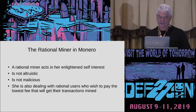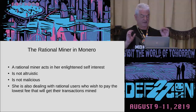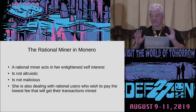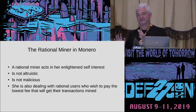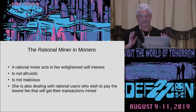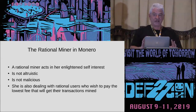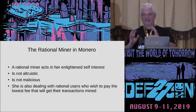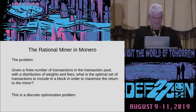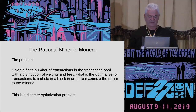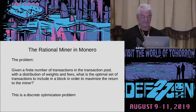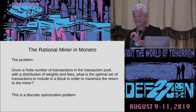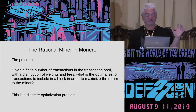Now taking a close look at the rational miner. The rational miner is neither altruistic nor malicious and acts in her enlightened self-interest. She's also dealing with rational users who wish to pay the lowest fee to get their transactions mined. This is the basic dynamic of a fee market in Monero: you have the miner, the users, and the penalty. Users are competing against the penalty to get their transactions mined. The problem for a rational miner is: given all these transactions in the pool with a distribution of weights and fees, what is the optimal set of transactions in a block to maximize the return to the miner? This is essentially a discrete optimization problem.